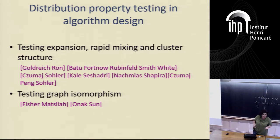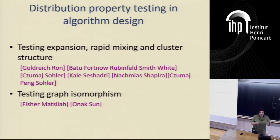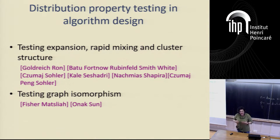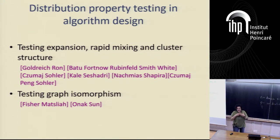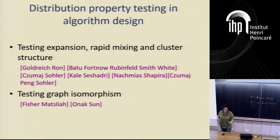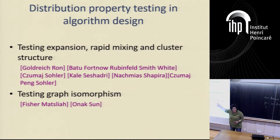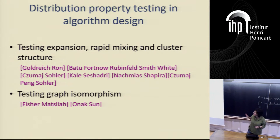As usual in science, we never get to things on the straight path. We were actually interested in testing expansion of a graph — distinguishing graphs that are expanders from graphs that are very far from being expanders. That turned out to be very related to these uniformity testing problems. There was a paper by Goldreich and Ron on degree-d expanders. If you're in an expander, you quickly converge to the stationary distribution, which is uniform on a d-regular graph. We were looking at what happens on a rapidly mixing Markov chain, and that's how we got to these questions.